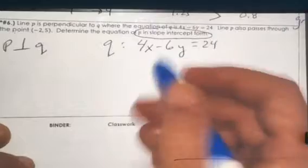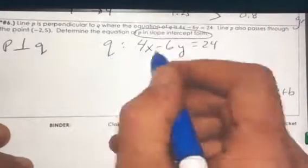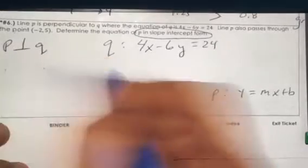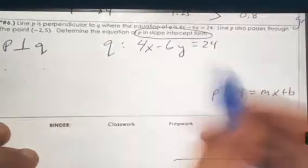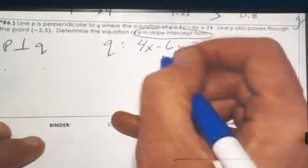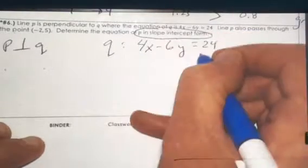Now, from here, let's figure out what the slope of Q is so that we can go find the slope of P. We have a lot of steps left—here we go, it's going to take up all of this space. All right, so let's subtract 4x from both sides.